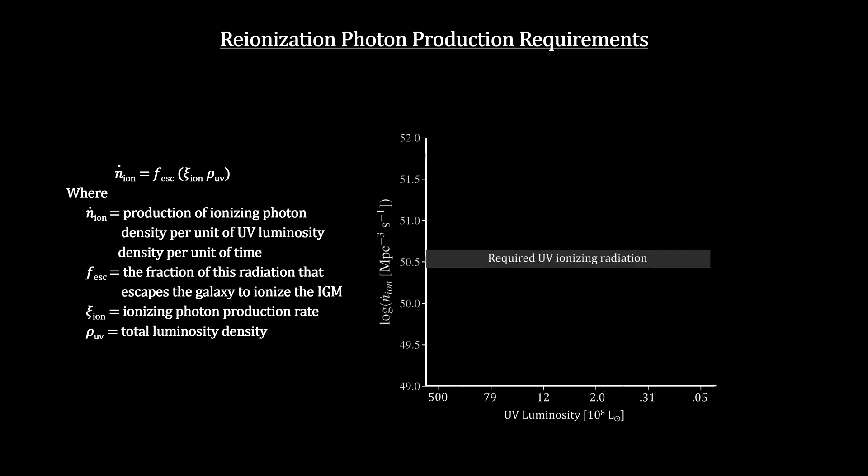The gray shaded region is the threshold required to maintain the universe ionized at z equals 7. The blue curve represents the case when the escape fraction is just 5%. And the red vertical line shows the limit probed by this work. The study concluded that, at this luminosity, galaxies produce enough radiation to re-ionize the universe.